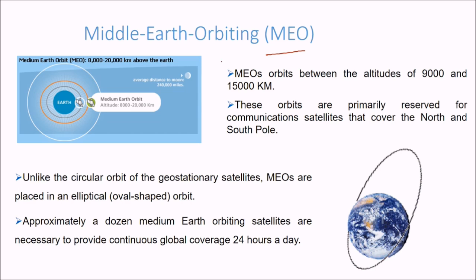Then we come to MEO, middle earth orbiting, which is from 8000 to 20,000 km above the earth. You can have variation in various books, you will see 9000 to 15,000 km. This is the median earth orbit. These orbits are primarily reserved for communication satellites that cover the North and South Pole. Unlike the circular orbit of geostationary satellites, MEOs are placed in an elliptical or oval shaped orbit. Approximately a dozen median earth orbiting satellites are necessary, near to 12, to provide continuous global coverage 24 hours a day.